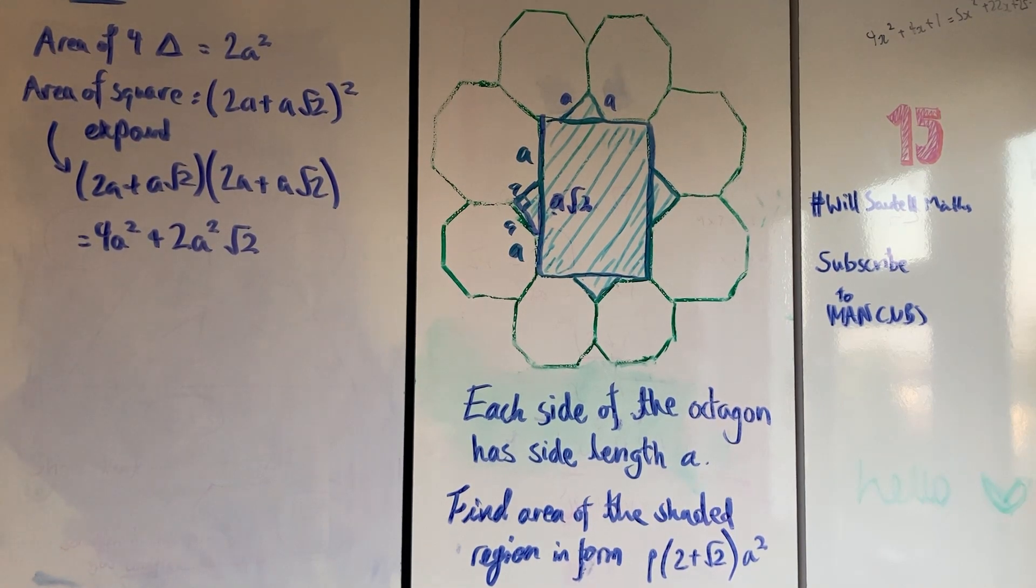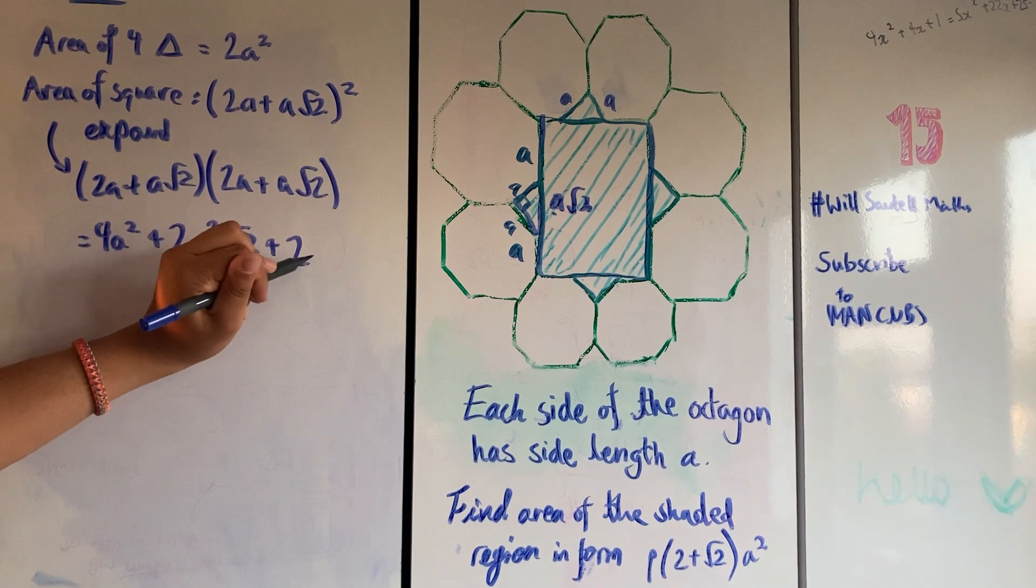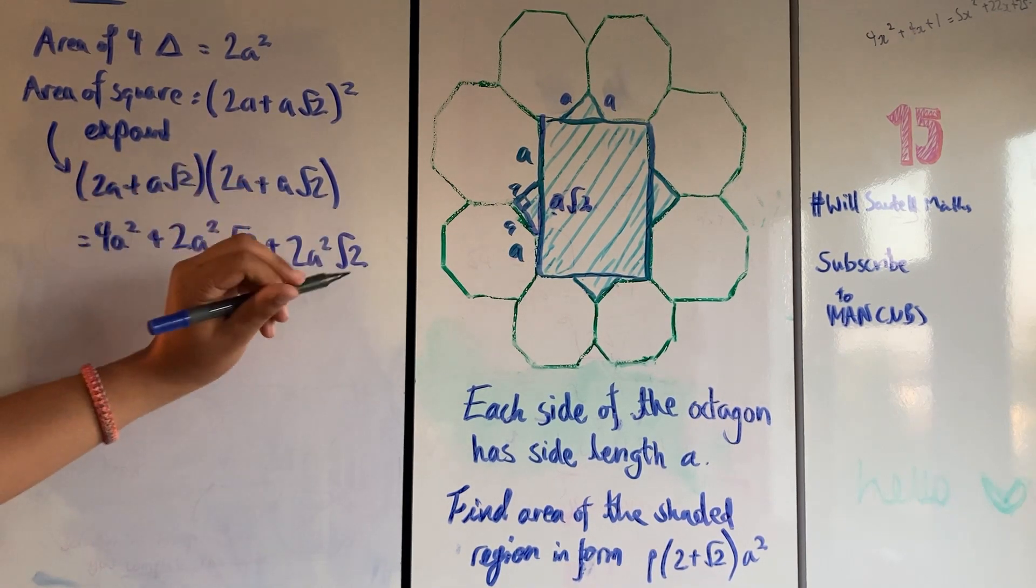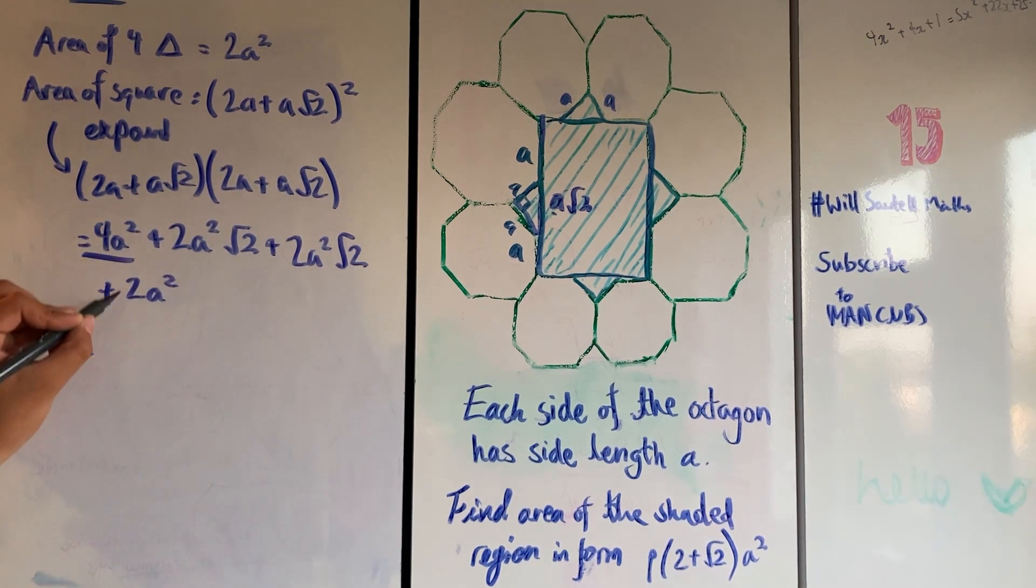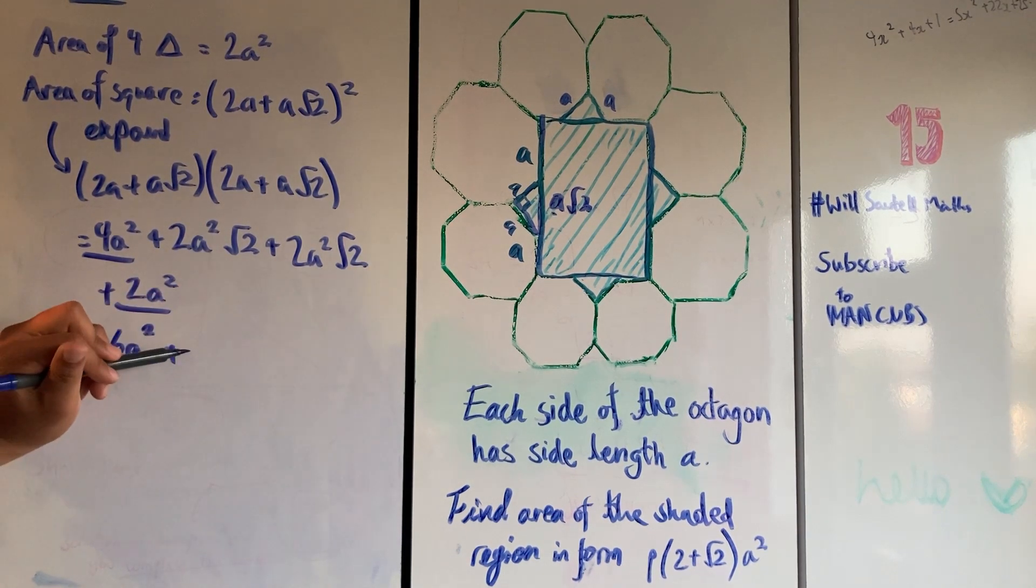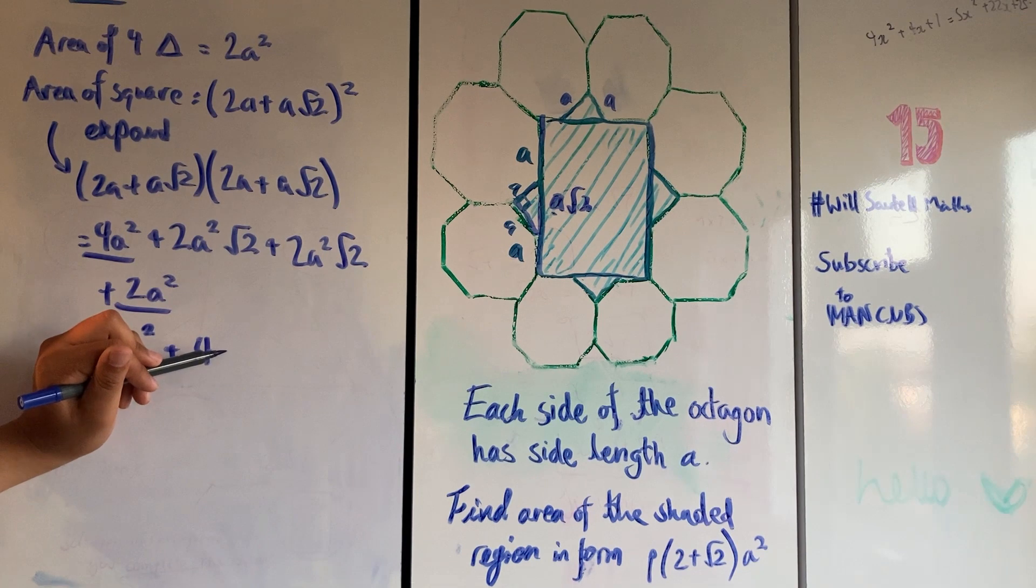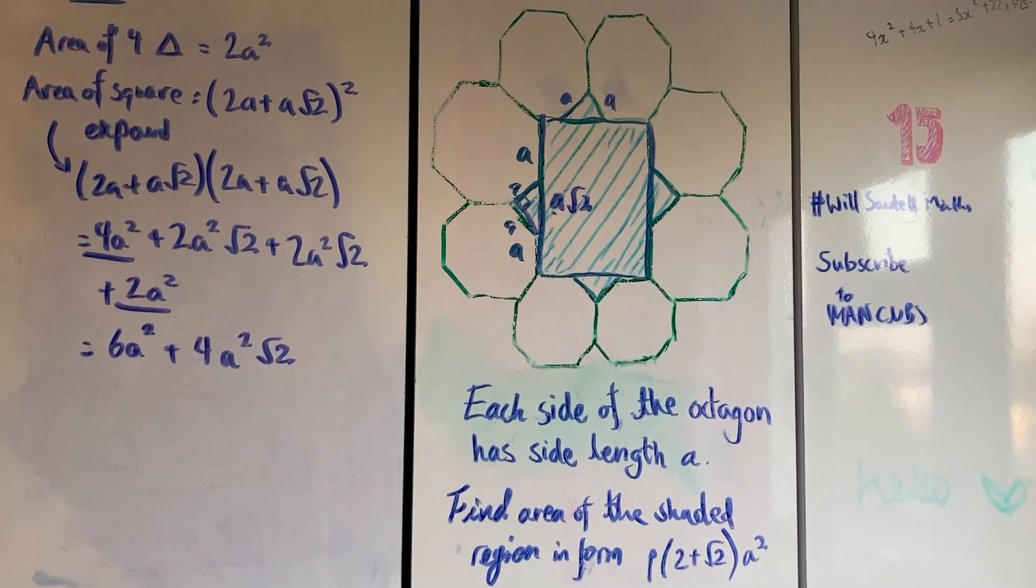So it's 4a² + 2a²√2 + 2a²√2. And then our final term: a√2 times a√2. A times a is a², and √2 times √2 is 2, so it's 2a². Now we've found some like terms. 4a² and 2a² equals 6a². And we've got 2 lots of 2a²√2, so it's 4a²√2. We've gotten to the stage where we've got the most simple expression to show the area of that square.